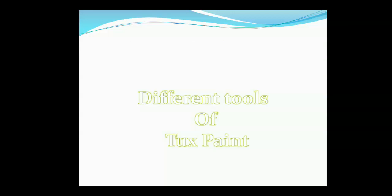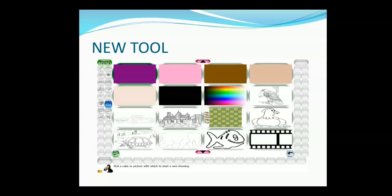Now we will learn about the different tools of Tuxpaint. The first tool is the New tool. When we start any work, we start from a new page. Similarly, when we start a drawing, we use a blank page using the New tool, so we can start a new drawing. It provides a blank and clean canvas. This canvas can be of different colors, and there are also pre-designed black and white images that children can fill with color according to their choice.